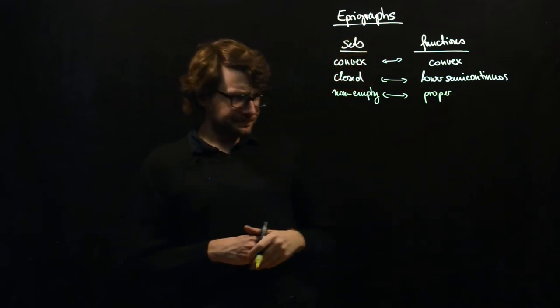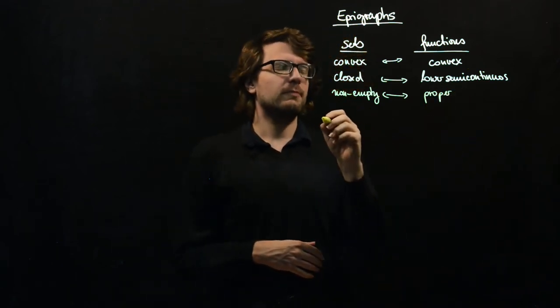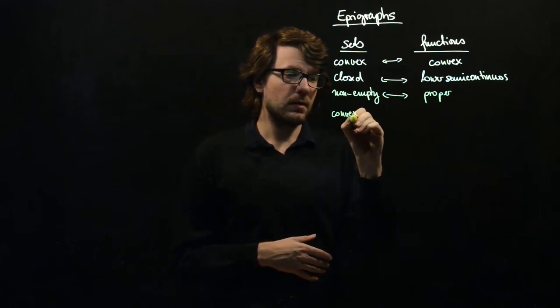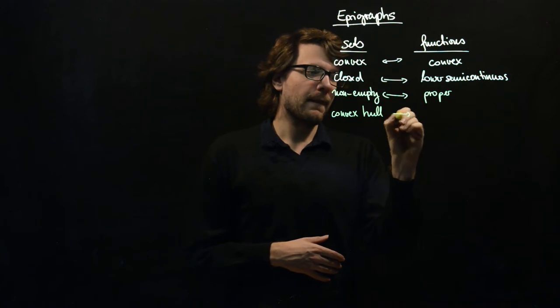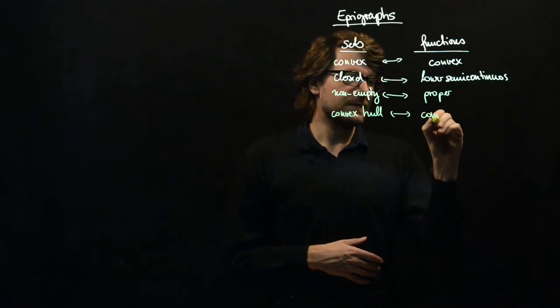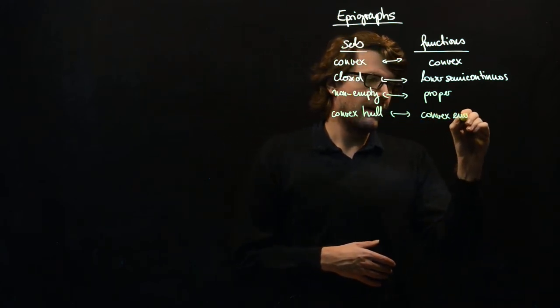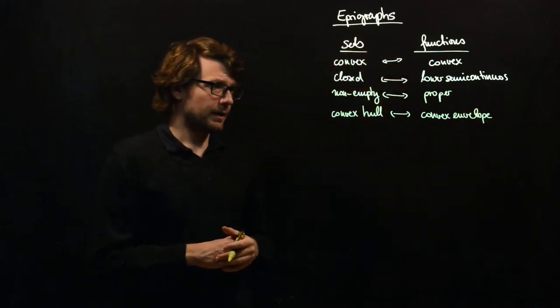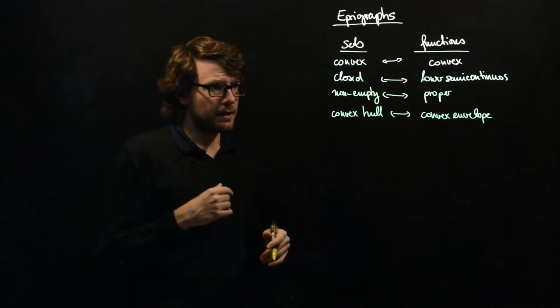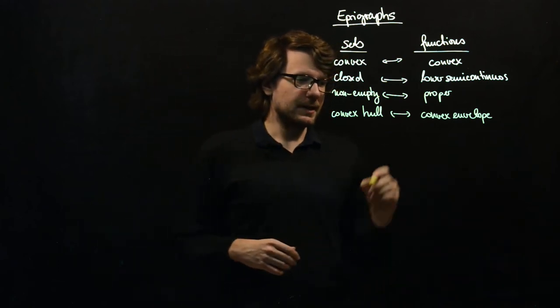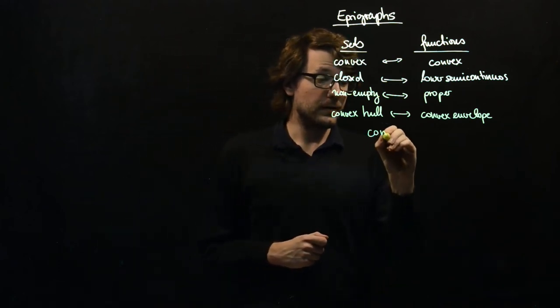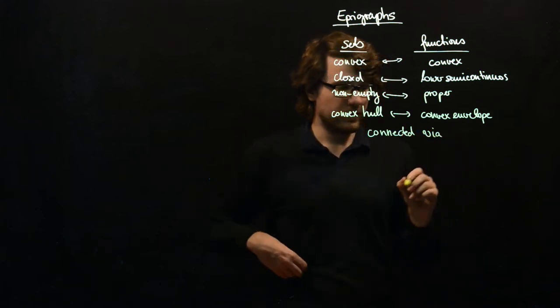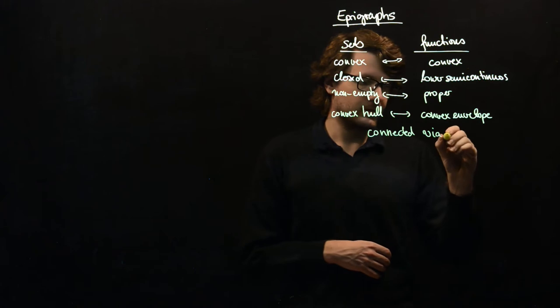And what we have seen in the exercises, for example, we have the convex hull and here we have the convex envelope. And you might now ask how are these things connected and it will turn out that one very tight connection is via the so-called epigraph.